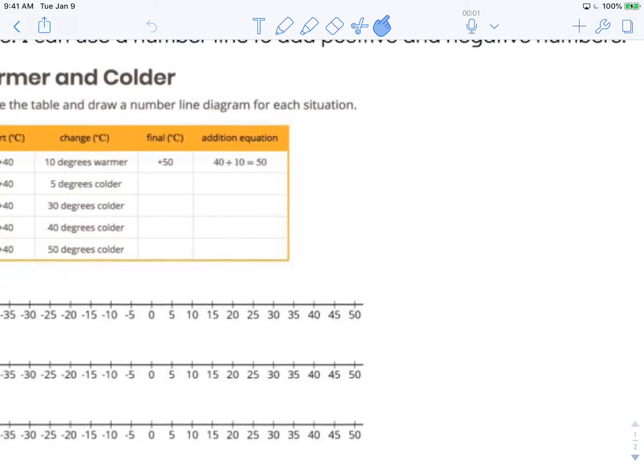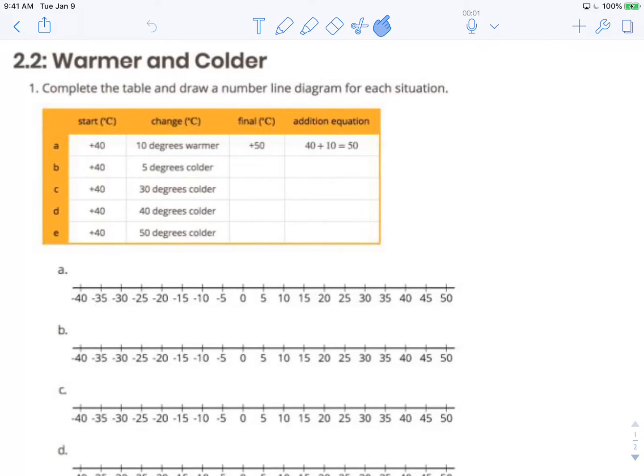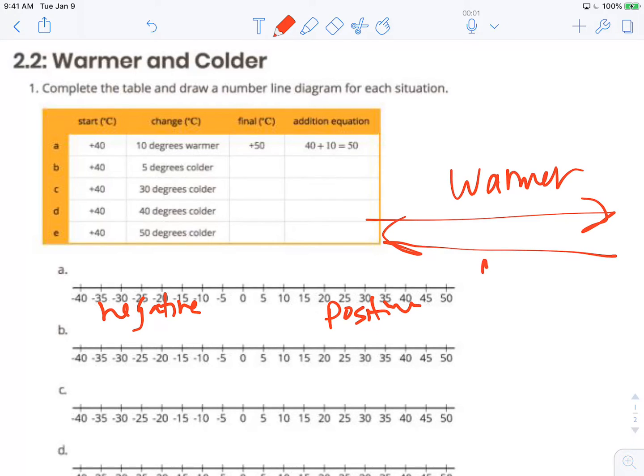You can see that number 1 has been done for us already in this table. We'll just draw on the diagram what is missing. So we start at positive 40. We know that positive is to the right on the number line and negative is here to the left, and as we move towards the right it's going to get warmer and as we move towards the left it's going to be cooler or colder of a temperature.